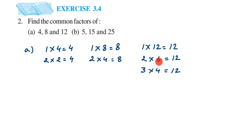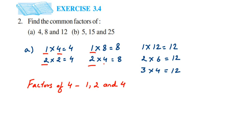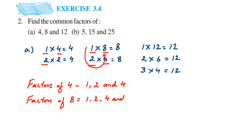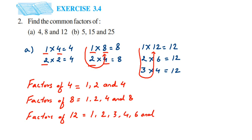Now let's write down the factors of each number in ascending order — that makes it easier to find the common factors. Factors of 4: 1, 2, 4. Factors of 8: 1, 2, 4, 8. Factors of 12: 1, 2, 3, 4, 6, 12. Writing in order means you won't miss any numbers or find it difficult to spot what's common.